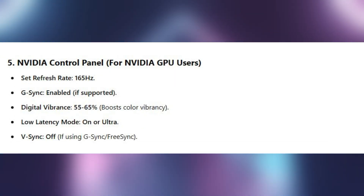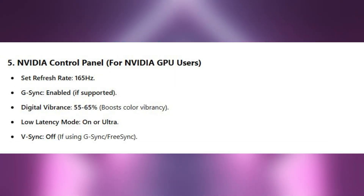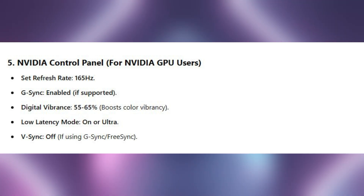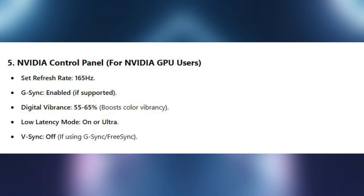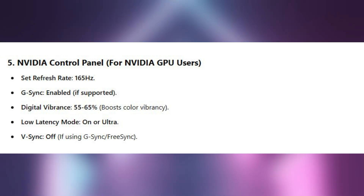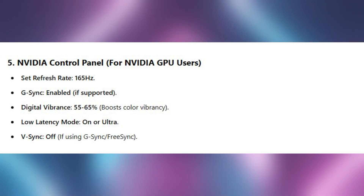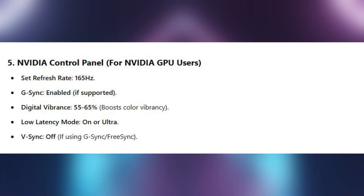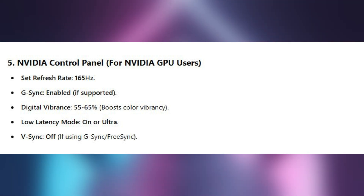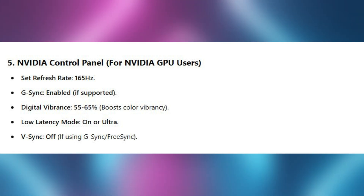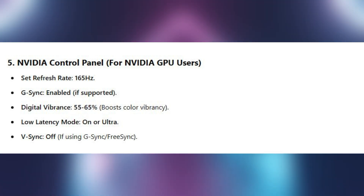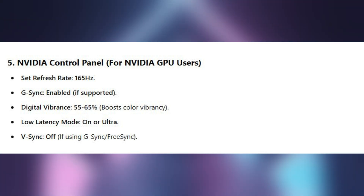For gamers using Nvidia, set these settings on your Nvidia Control Panel: set the refresh rate to 165Hz, enable G-Sync, and keep the digital vibrance to 55 to 65%.